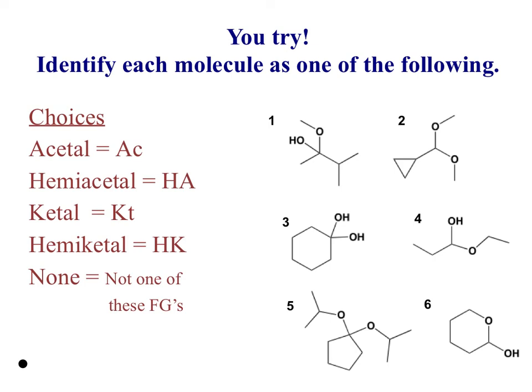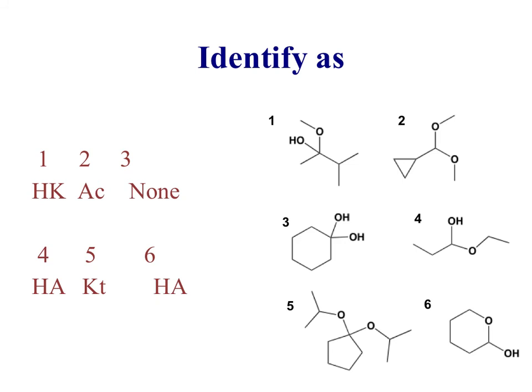Let's show what the answers are. Number one is a hemiketal. Number two is an acetal. Number three is none of those. Number four is a hemiacetal. Number five is a ketal. And number six is a hemiacetal.